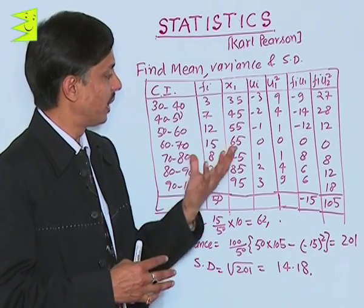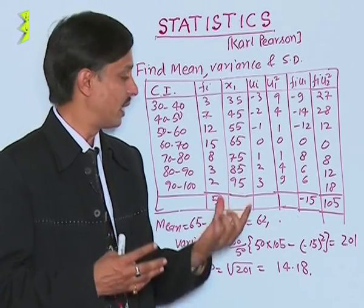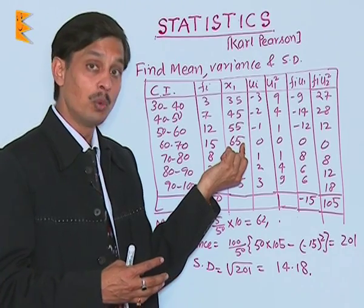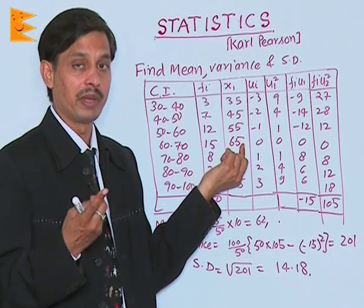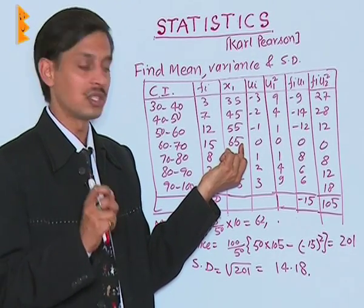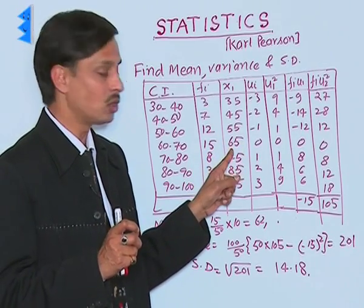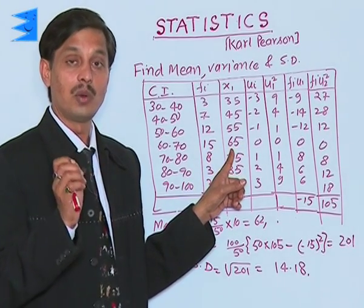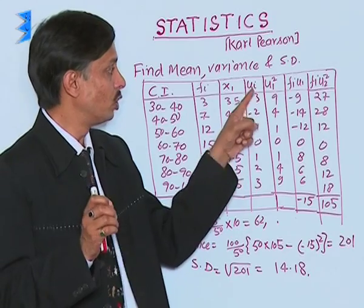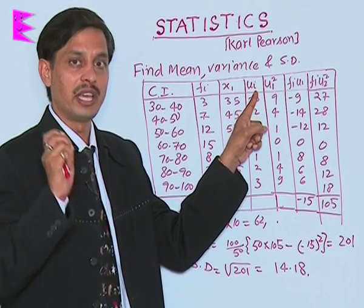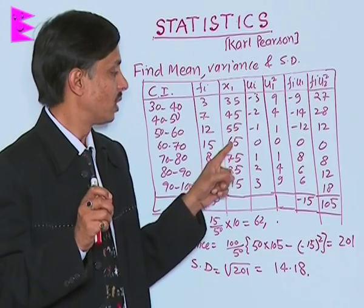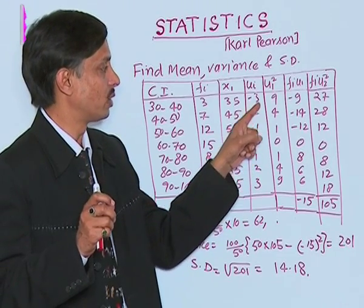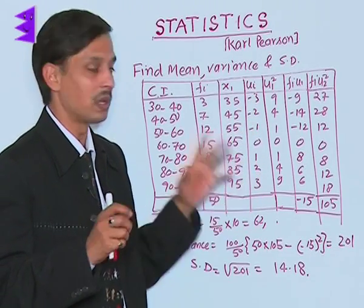Using the shortcut method from class 10, we can take any observation as the assumed mean. Taking 65 as the assumed mean, uᵢ = (xᵢ - assumed mean)/h gives us: -3, -2, -1, 0, +1, +2, +3.